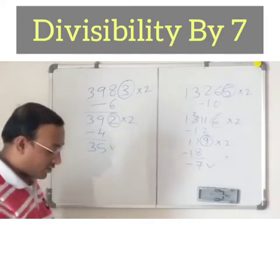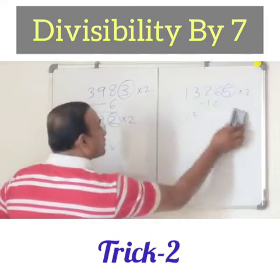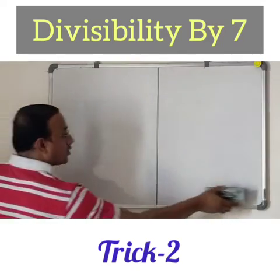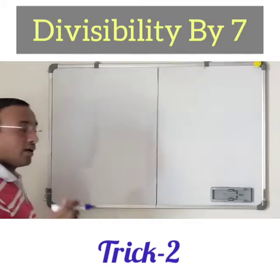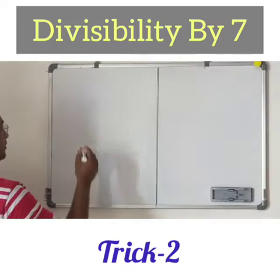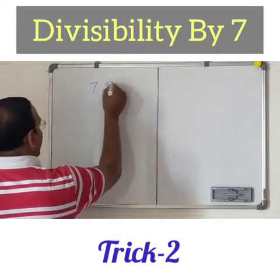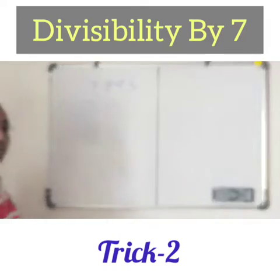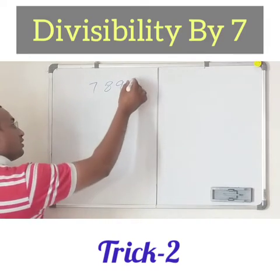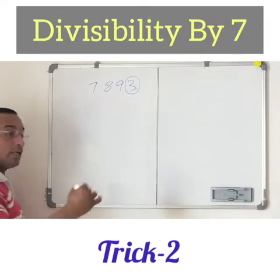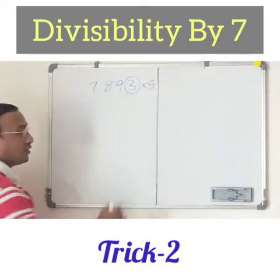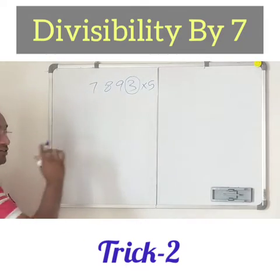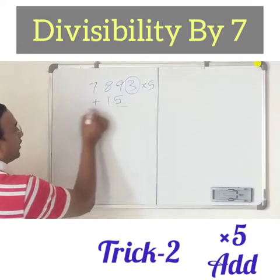Let's go for trick 2. In this trick, let's take an example: 7893. So here, what to do? Just take the last digit — 3 — but this time multiply it by 5. What do you get? 3 times 5 is 15. Add it to the remaining digits — that is 789 plus 15.